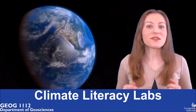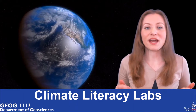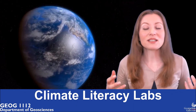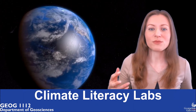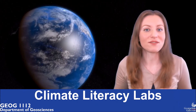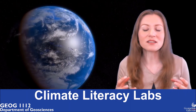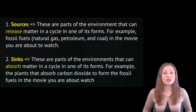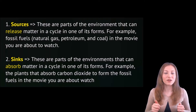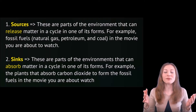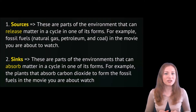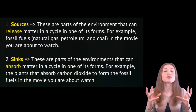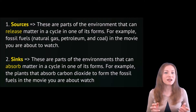The carbon cycle is one of the matter cycles. It means that due to natural processes, elements are constantly moving in various forms between different components of the environment. Learning about environmental cycles, it's important to understand concepts of sources and sinks. Sources are parts of the environment that can release matter in a cycle — for example, the ocean can release water vapor into the atmosphere. Sinks, in contrast, are the parts of the environment that can absorb matter in a cycle — for example, plants can absorb carbon from the atmosphere.